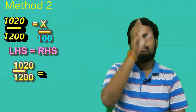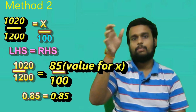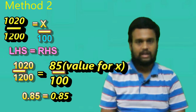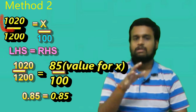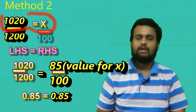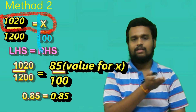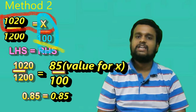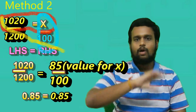If you have 0.85, you will have 85. What do we do? If you have equal to, you will have to divide it by vertical, horizontal, and you will multiply it by cross.